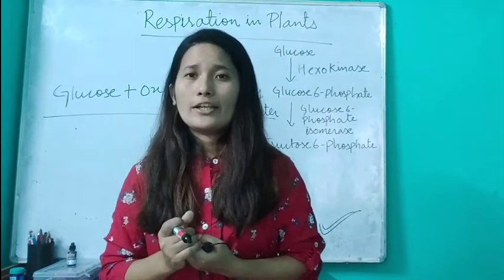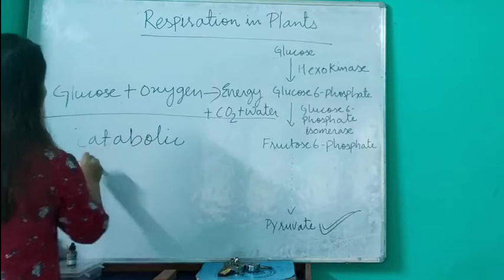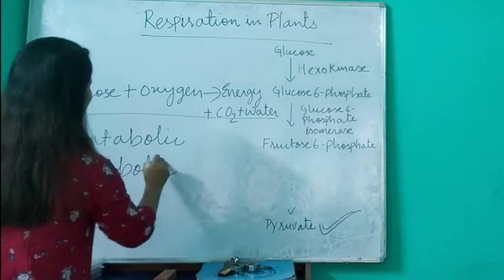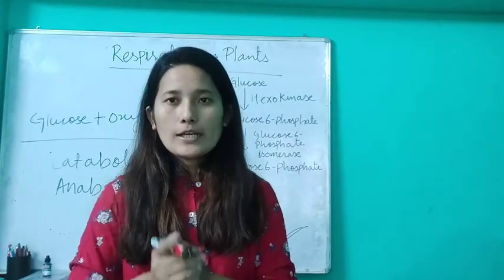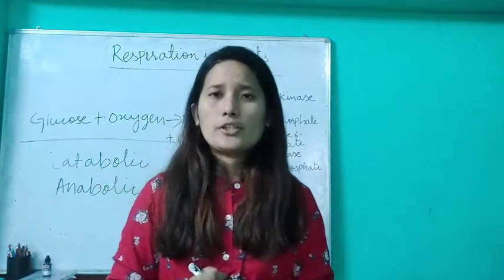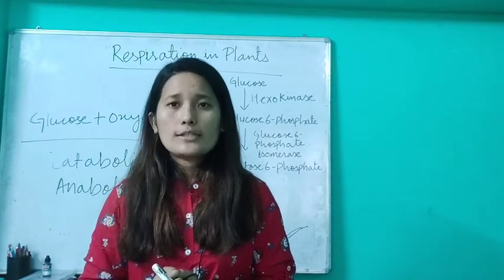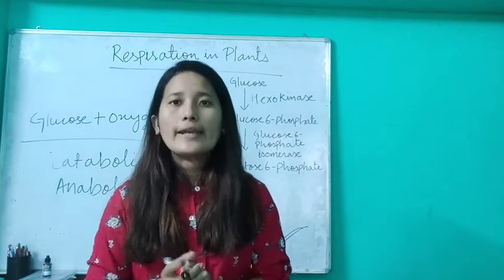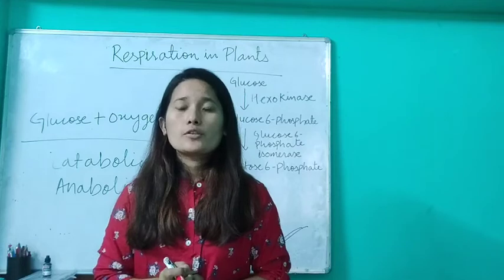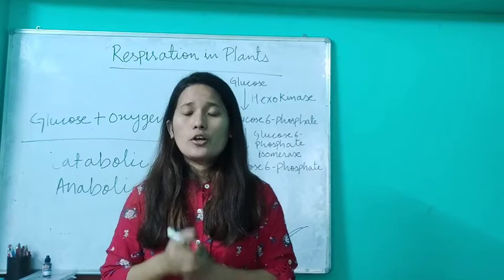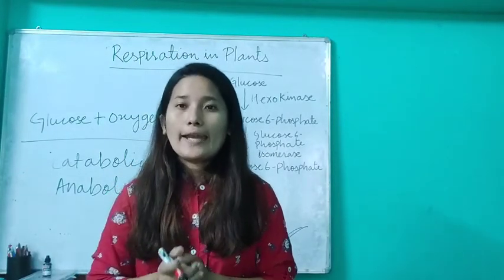All chemical processes can be divided into two types: catabolic and anabolic. In a catabolic process, breakdown of something takes place and energy is released. Respiration is a catabolic process because glucose is broken down and energy is produced. Anabolic is the opposite — something is being built up and energy is utilized. Photosynthesis is an anabolic process because carbon dioxide and water, in the presence of sunlight, are used to make glucose — something is being constructed.